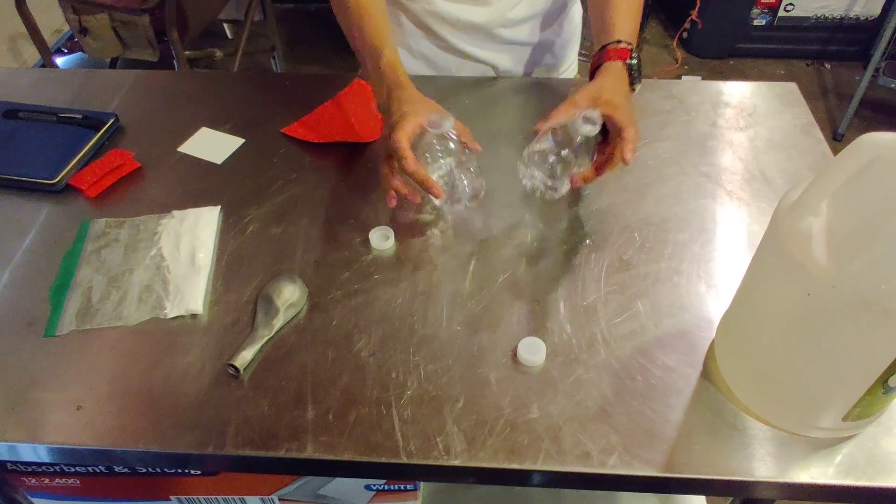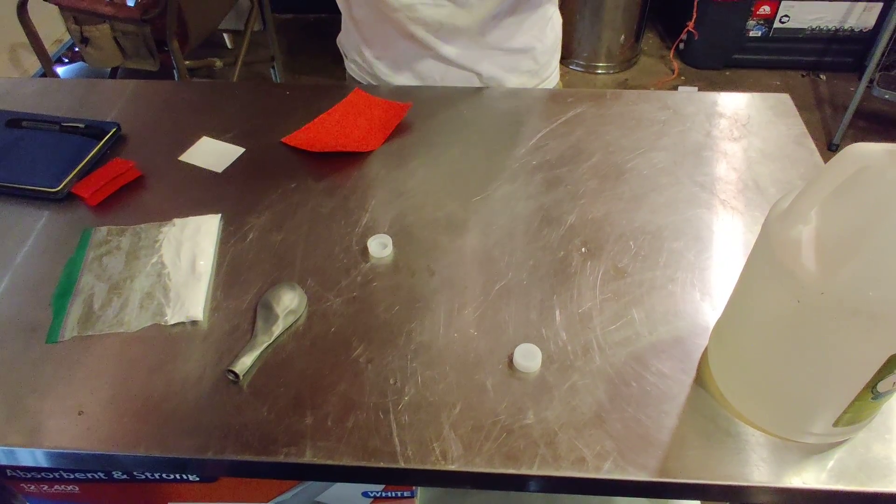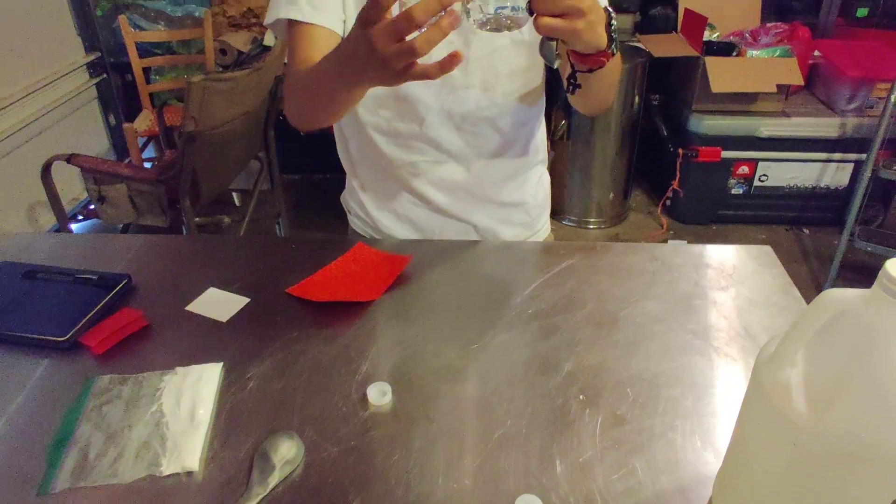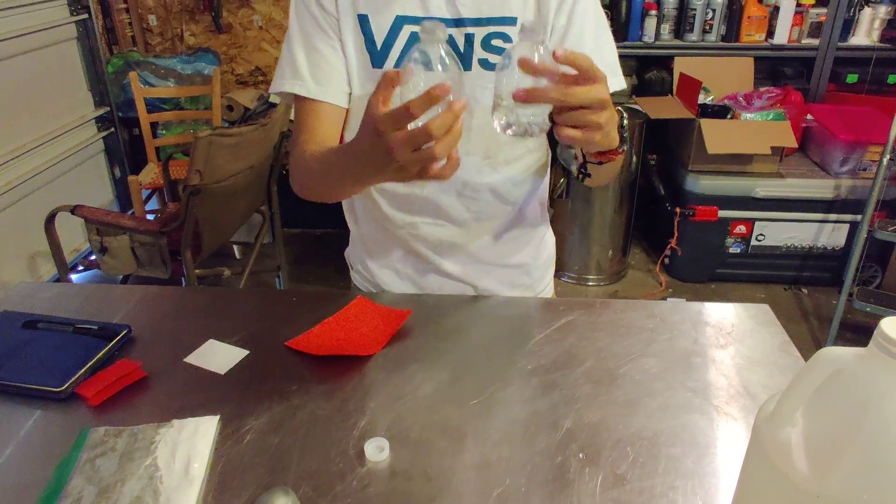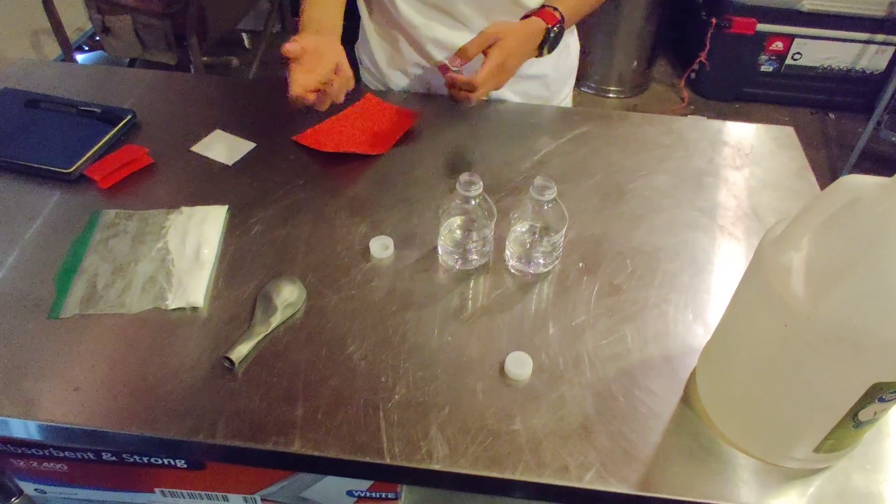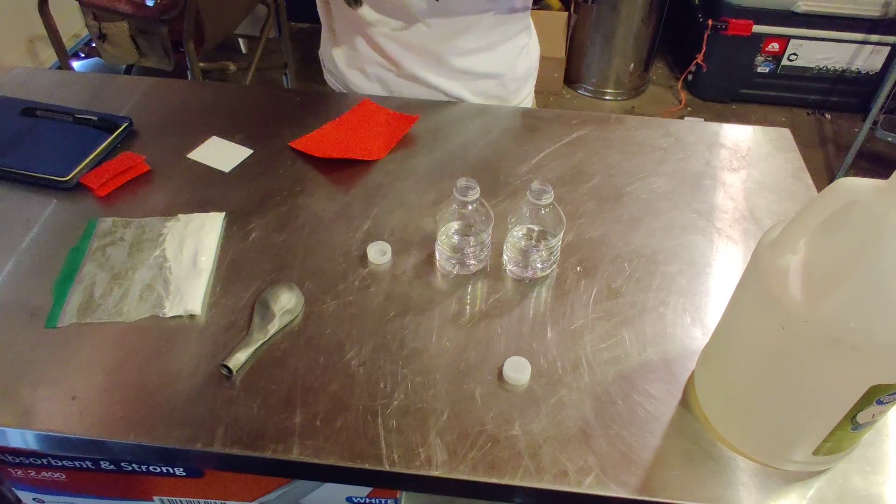So first things first, you guys will get vinegar in a bottle, or two bottles, one empty one with vinegar. Divide it in half, maybe even less. You don't want to have too much because then it will explode and fill the balloon with liquid and we just want it to be filled with gas.